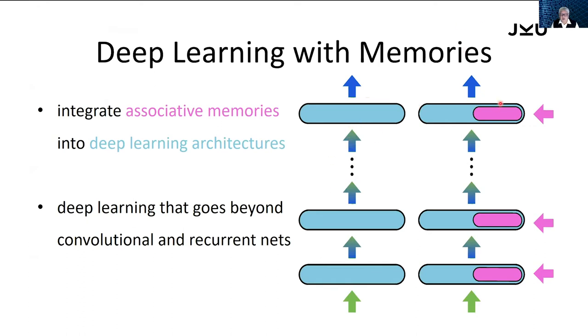Here you see a deep learning architecture, and we want to build a deep learning architecture where memories are integrated. And this goes beyond convolutional neural networks or recurrent neural networks.